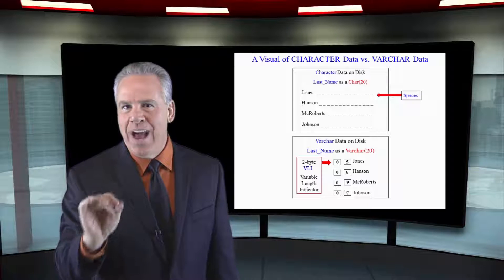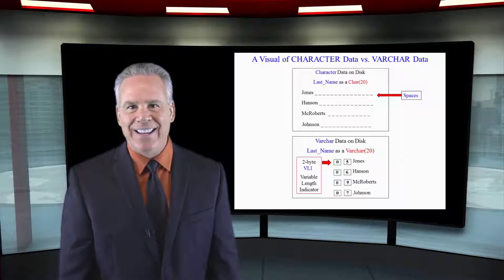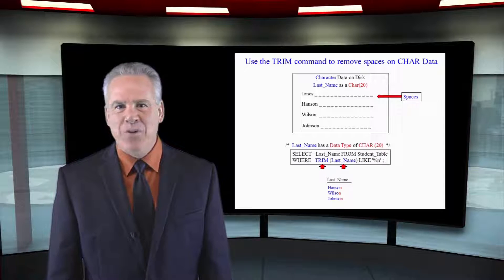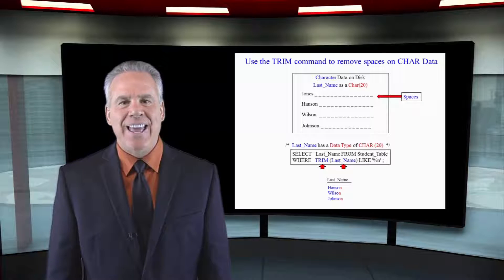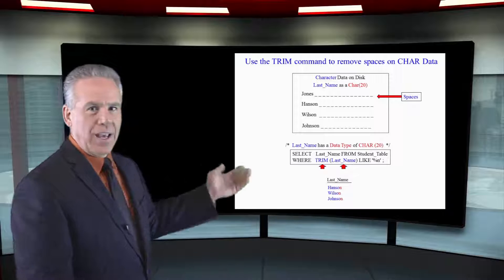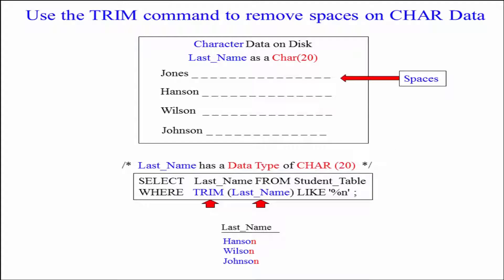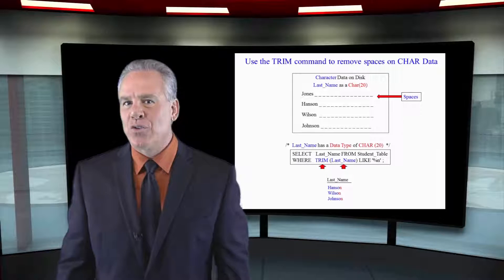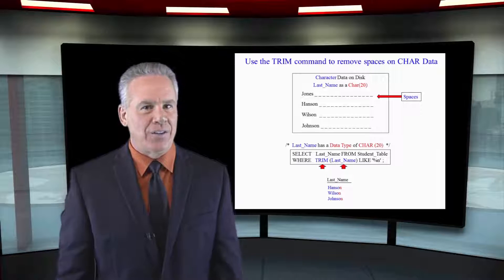VARCHAR data will not have spaces at the end ever. Anytime you want to remove spaces at the end of any character data, you just use the TRIM command. Now I want you to notice here that there are parens around last name. When I put the parens around last name and I put a command right in front of that such as TRIM, they say oh, they're going to massage that or alter that or convert that. The TRIM will trim leading and trailing spaces from a character data type.